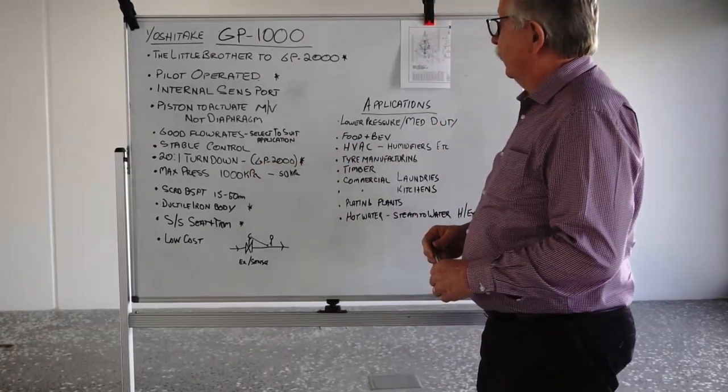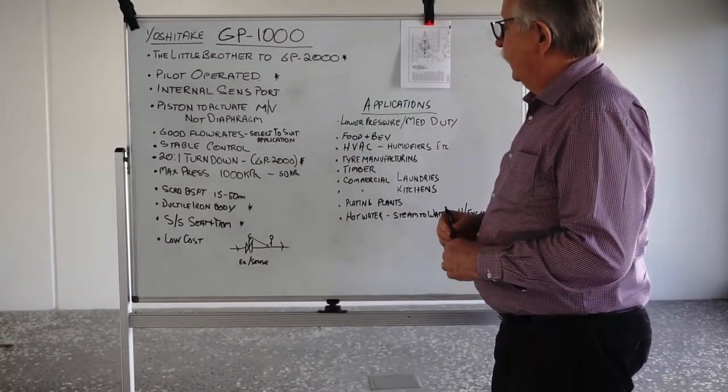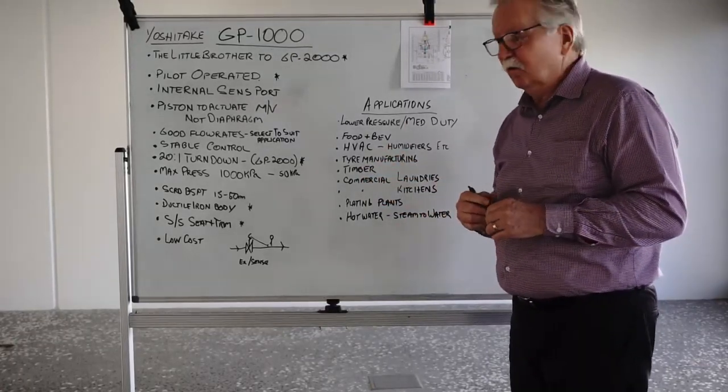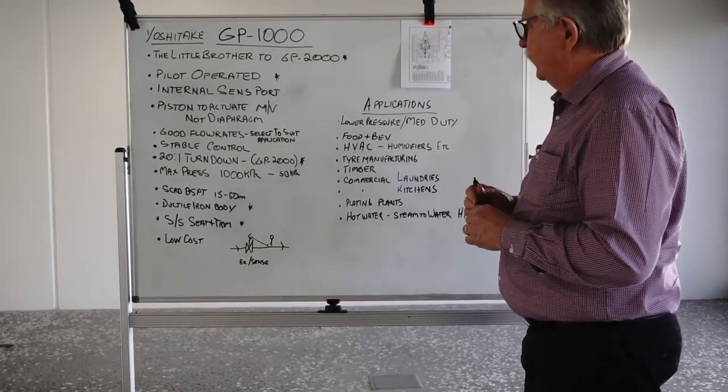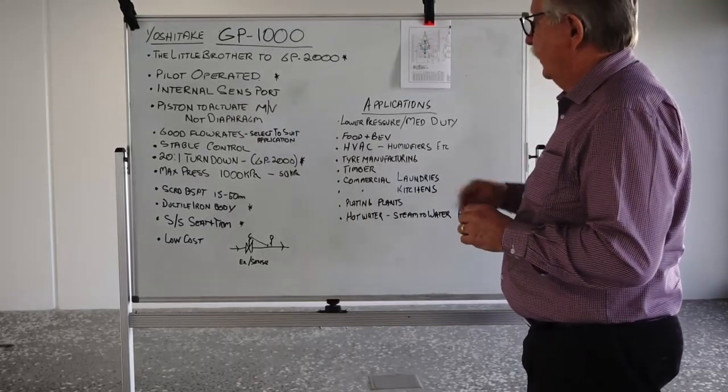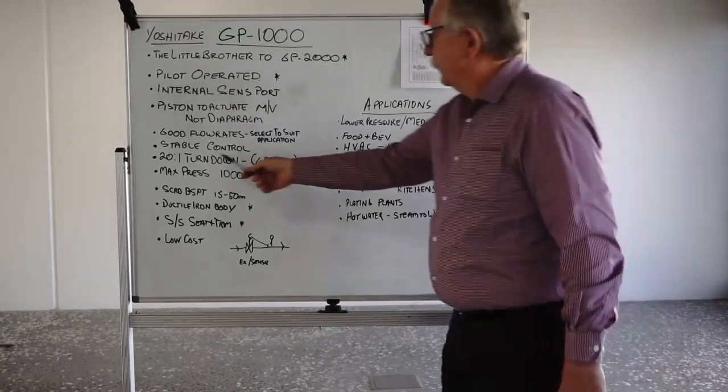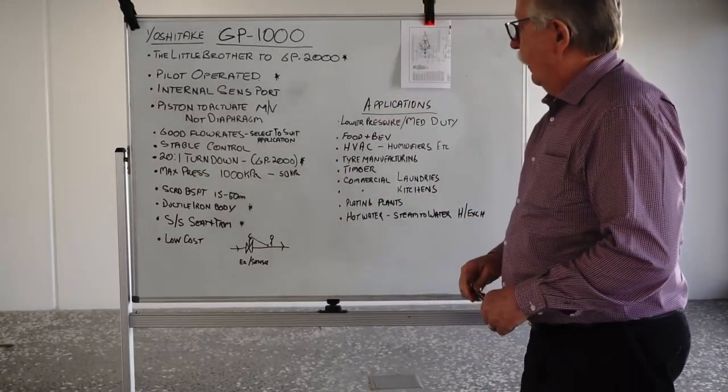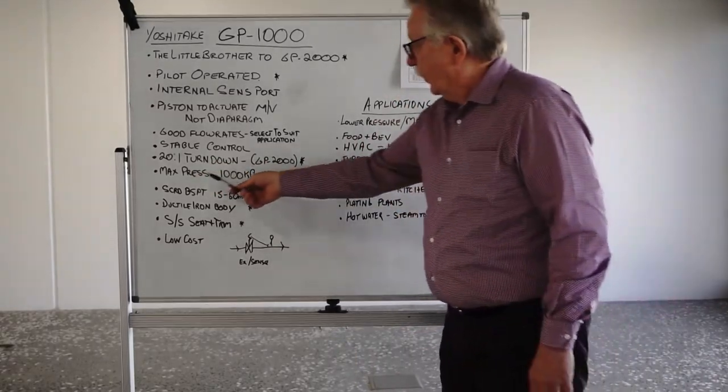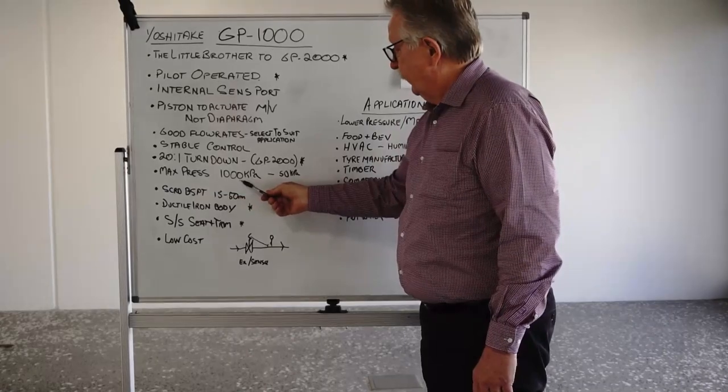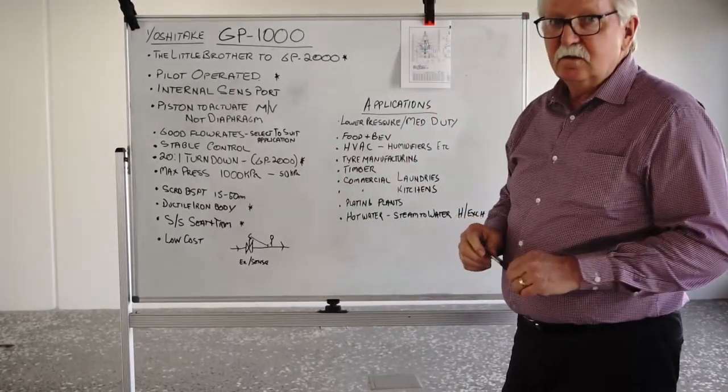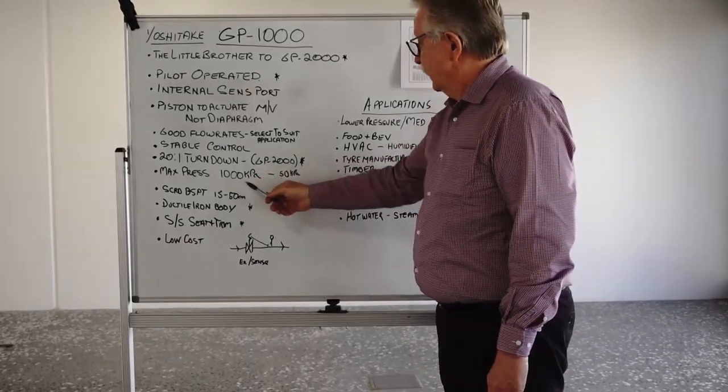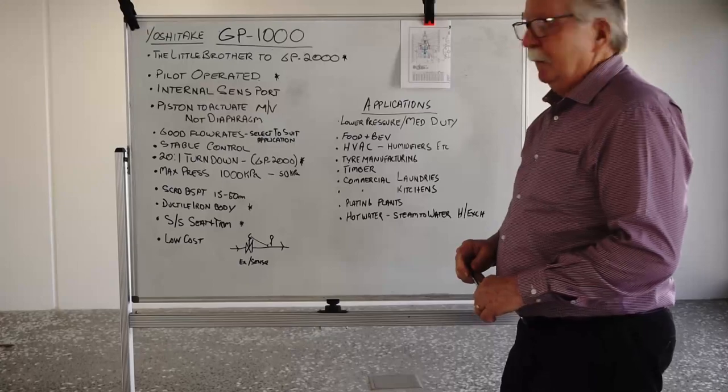They do have very stable control, similar to the GP2000. Once they're set under steady load conditions, they'll just sit there all day long trying to maintain that downstream pressure. The turndown is the same as the GP2000, 21 turndown. But it has a maximum operating pressure of 1000 kPa where the GP2000 is 2000 kPa. So you can control from 1000 kPa down to as low as 50 kPa, which is pretty good really.